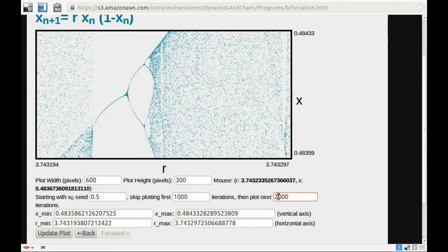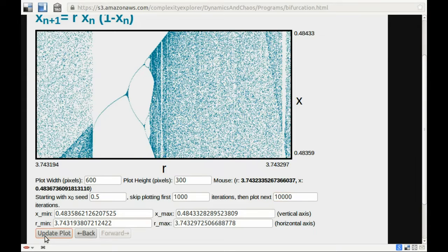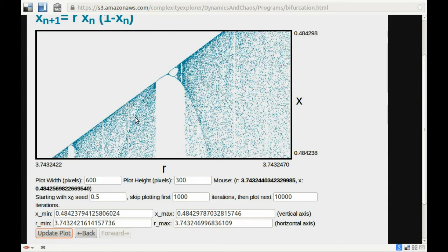And now maybe I'll try plotting 10,000 points. It's going to take a little while, hopefully not too long. That sort of darkens it up. Let's zoom in a little bit more. Let's see what's going on right up here. I'll try that again. All right, so let's zoom in there. Period doubling again.